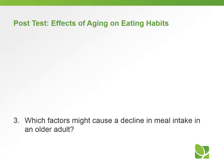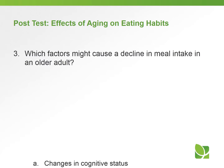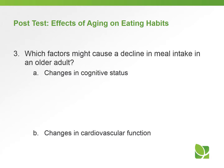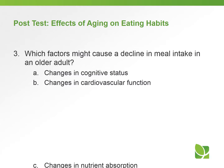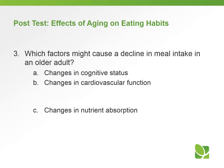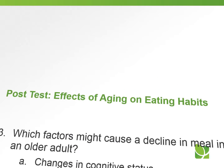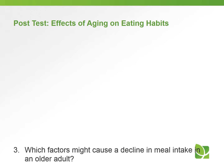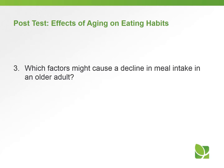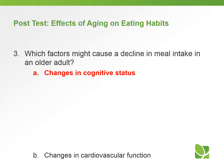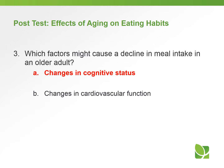Question number three: which factors might cause a decline in meal intake in an older adult? A, changes in cognitive status; B, changes in cardiovascular function; C, changes in nutrient absorption; or D, none of the above. The answer is A — changes in cognitive status.